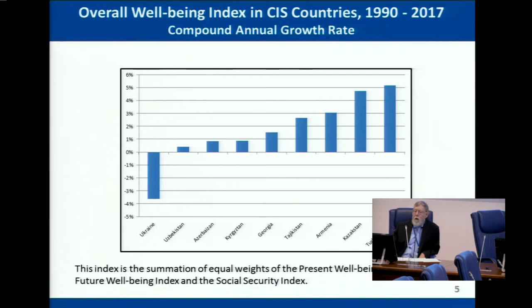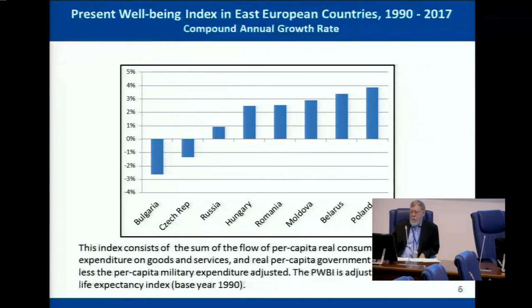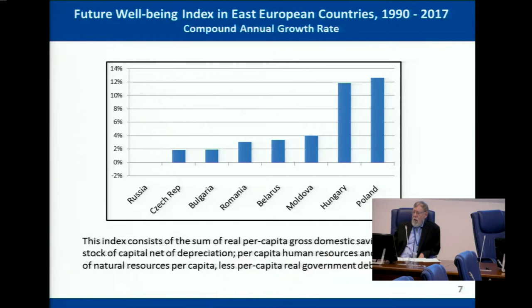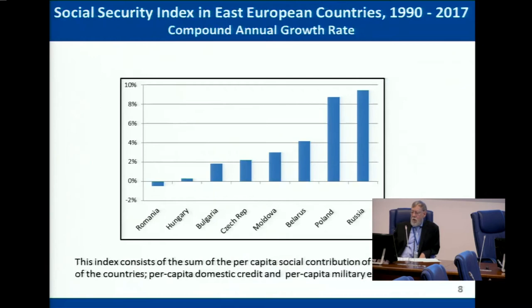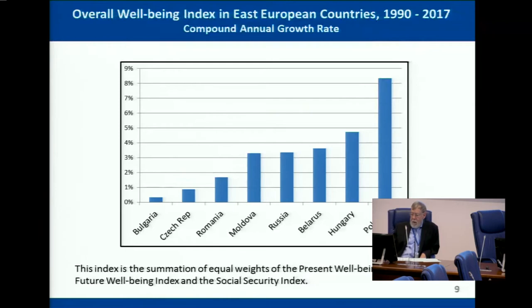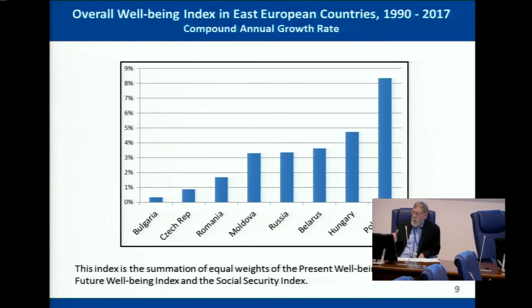Turning to the East European countries: for present well-being, Poland has done very well — that makes sense — and Belarus is number two. Czech Republic does poorly on consumption, which is surprising as it is often considered a success story. For future well-being, Poland and Hungary do well, which makes intuitive sense; Russia is worst for future well-being. For social security, Russia is number one, which is surprising — perhaps reflecting the big jump at the end. Poland is number two. In the overall index, Poland is the big winner. I would be very interested in people's reactions to these numbers, because there will be many questions about why particular variables were chosen for this index.